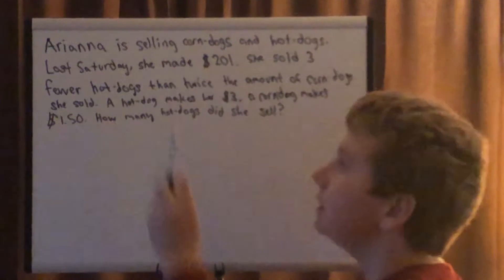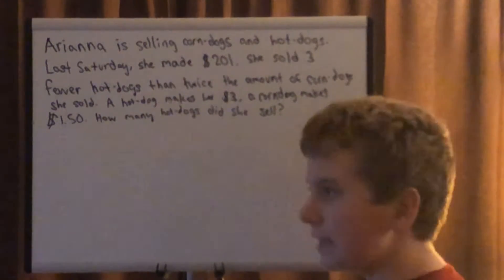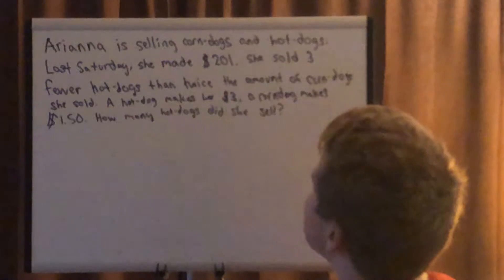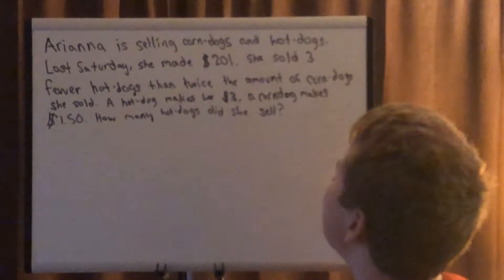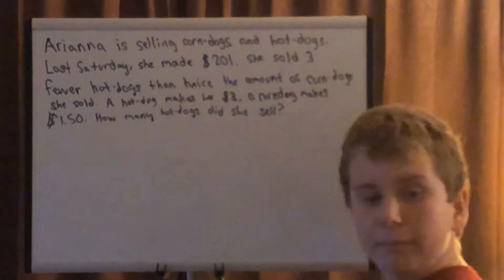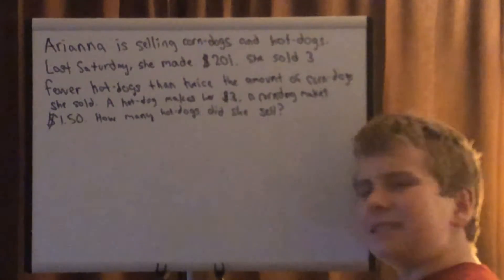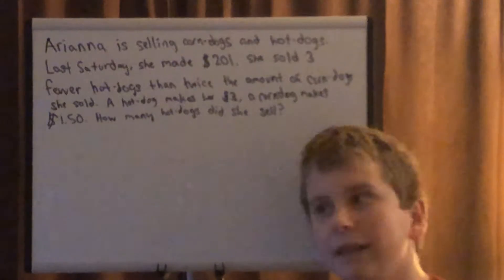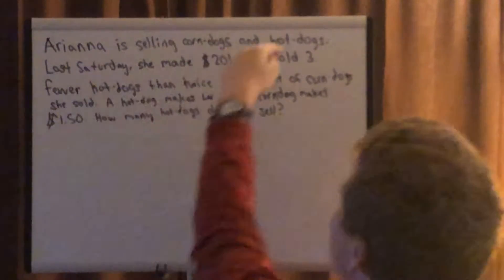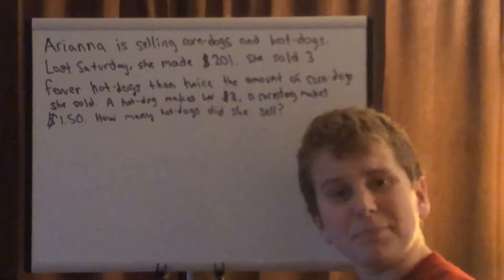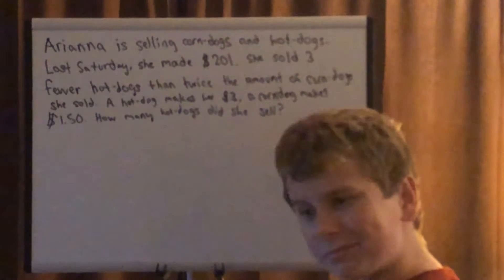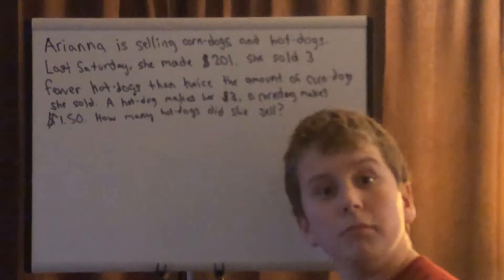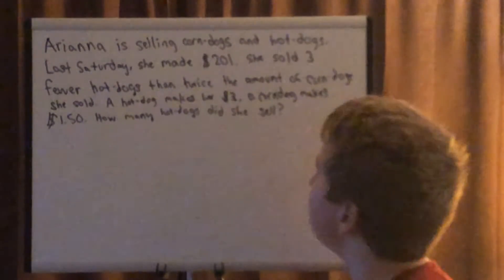Ariana is selling corn dogs and hot dogs. Last Saturday she made $201 — pretty good profit. She sold three fewer hot dogs than twice the amount of corn dogs she sold. A hot dog makes her $3, a corn dog makes her $1.50. How many hot dogs did she sell? This seems complicated — you've got different things going on, you've got the $201 total and the different prices. It's expressed verbally, quite a few words, but that's what we've got to translate into numbers.